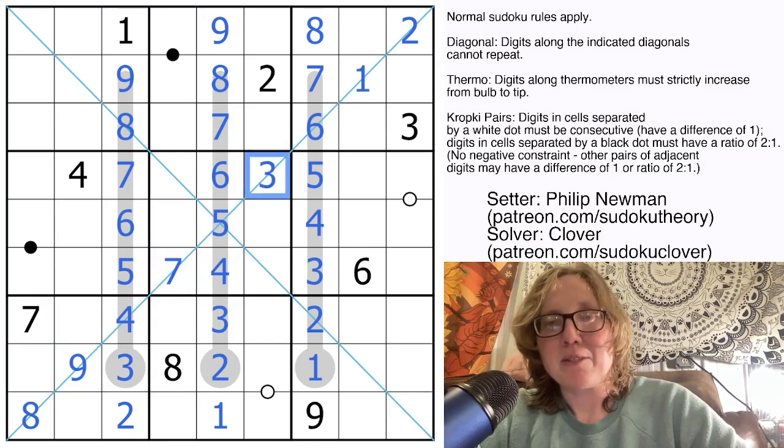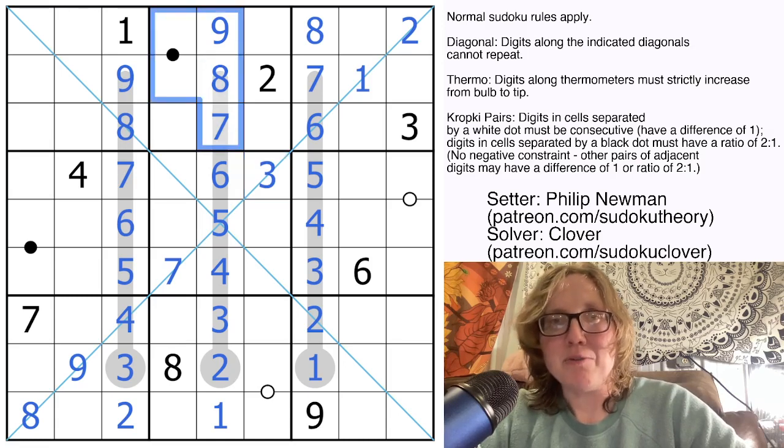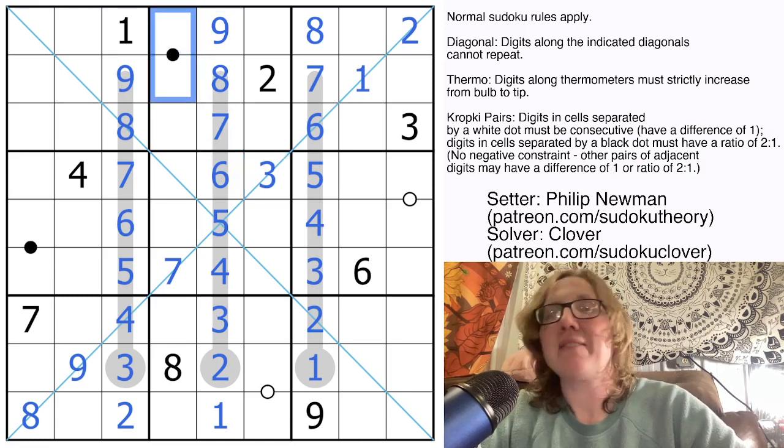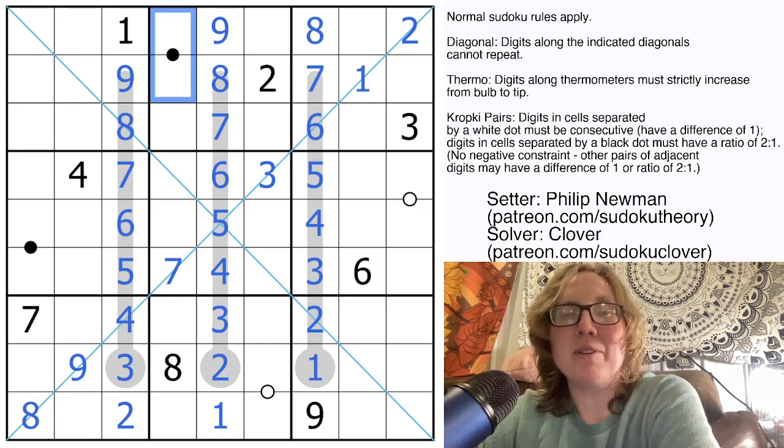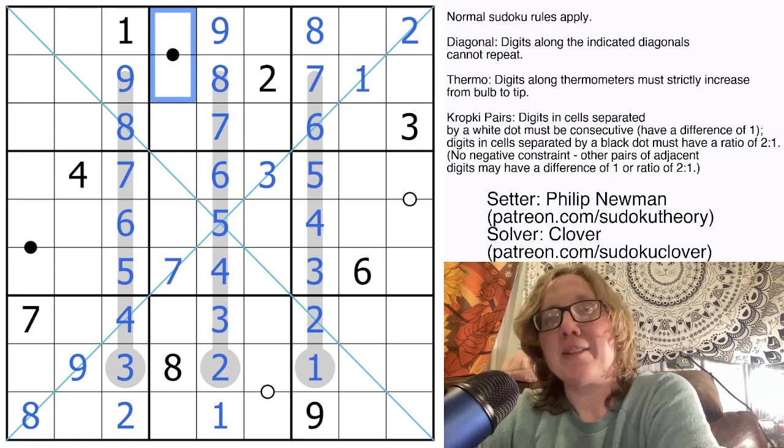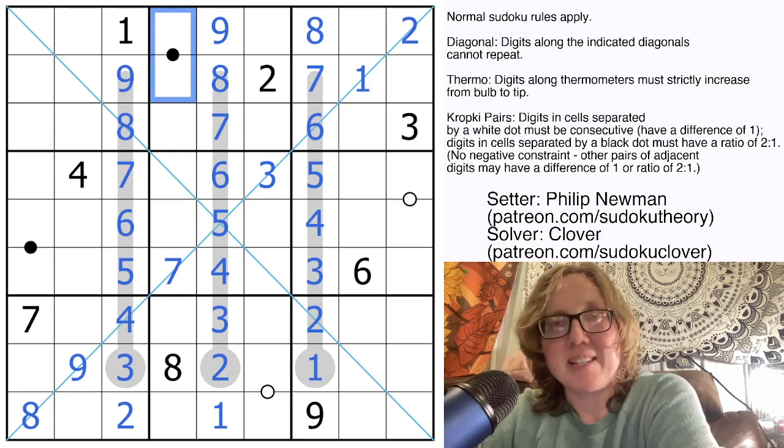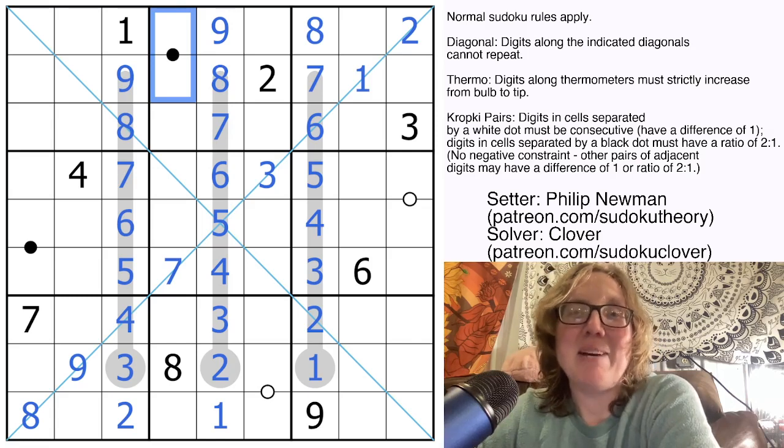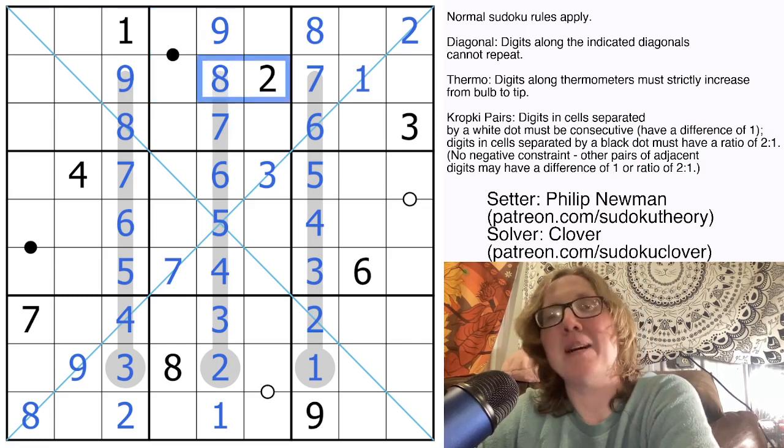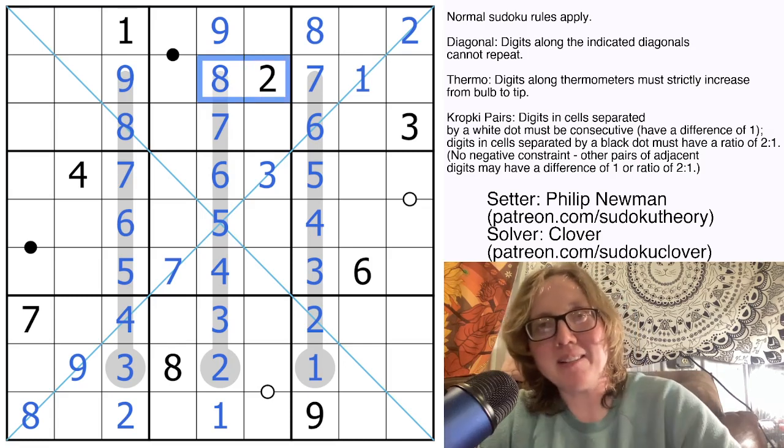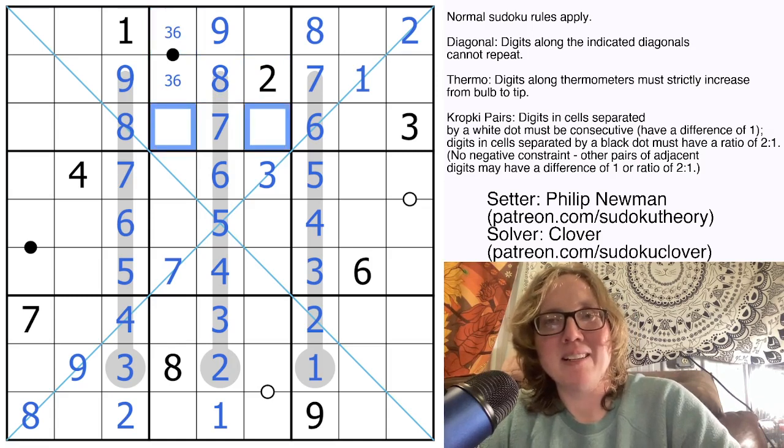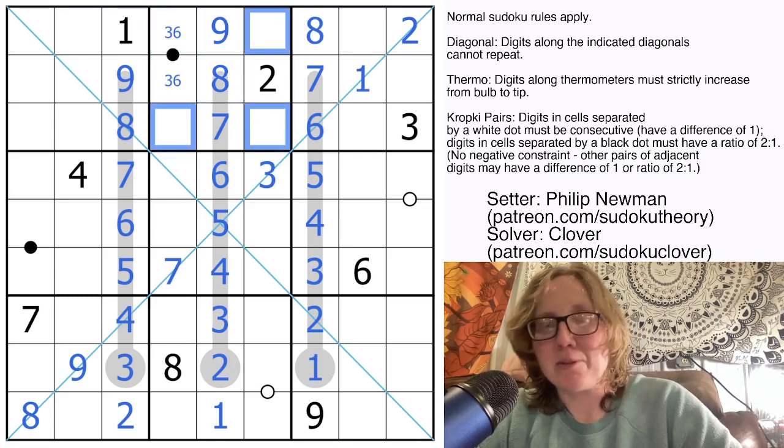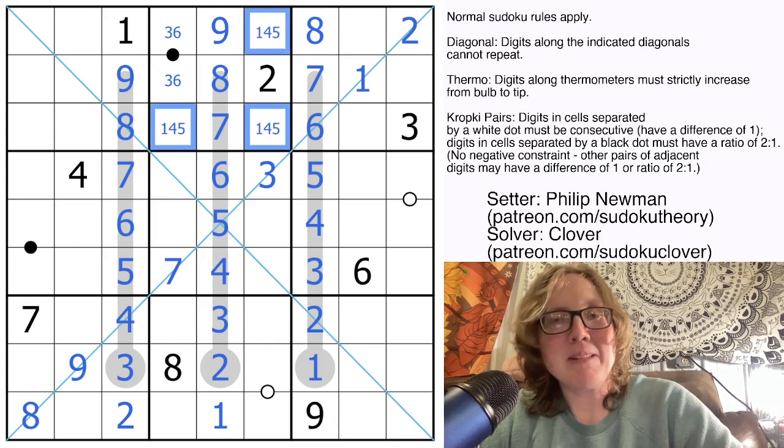Now let's take a moment and look at some of these Kropke dots. So in region 2, we have this black dot that tells us we have to have two digits in a 1 to 2 ratio. Now there are only a couple of ways to do that using Sudoku digits. One of them is 1 and 2. Another is 2 and 4. There's also 4 and 8 and 3 and 6. And if you were paying attention when I listed those, you see that we've eliminated 3 of the 4 possibilities already by already having a 2 and an 8 in the box. The only remaining way to do it is going to be to have it be 3 and 6. So now these are going to be 1, 4, and 5. Those are our 3 remaining digits in the region.